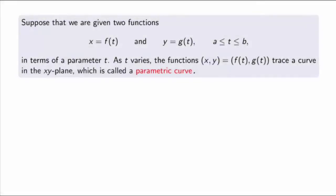So what is a parametric curve? The idea is to give two functions x equal to f of t and y equal to g of t in terms of a third variable t, which is called the parameter. As t varies, the functions trace a curve in the xy-plane — this is what is called the parametric curve. This is another way of specifying a curve in the xy-plane without giving an explicit equation satisfied by x and y.